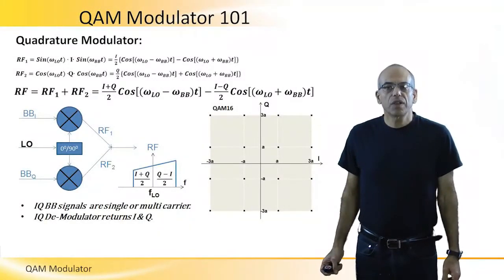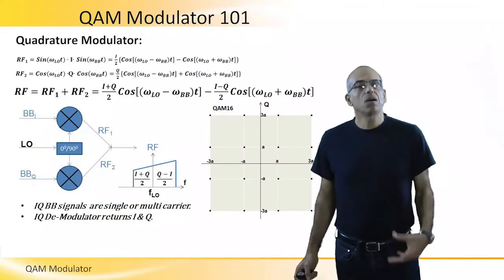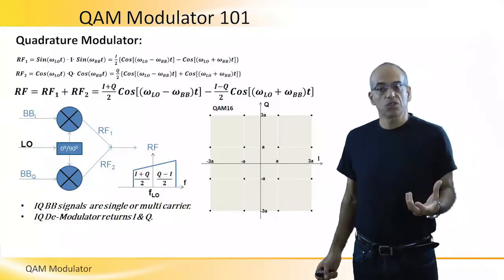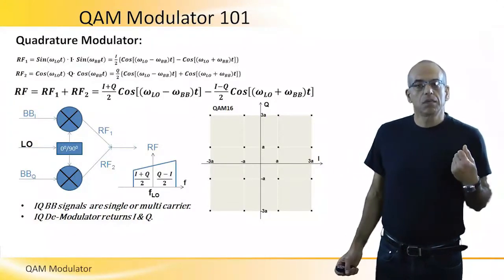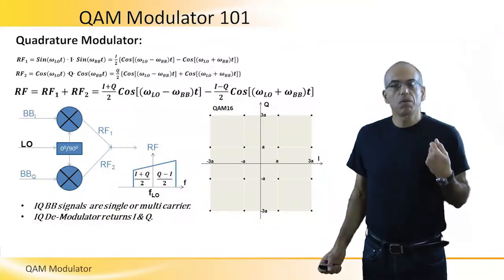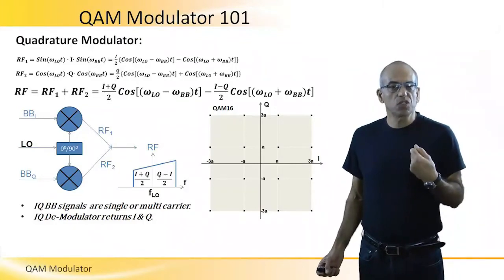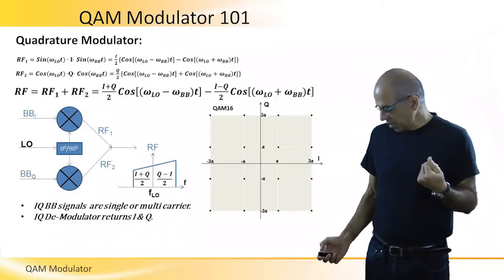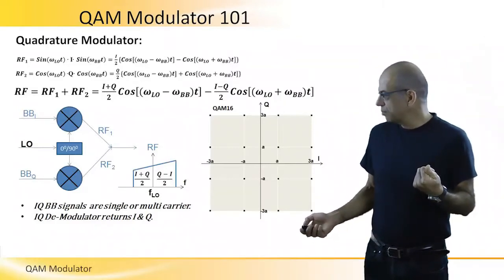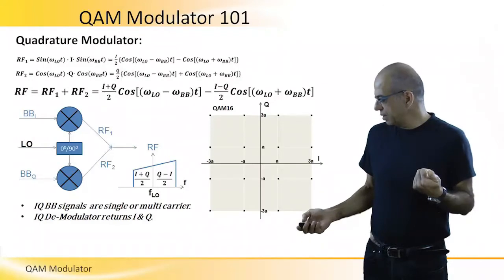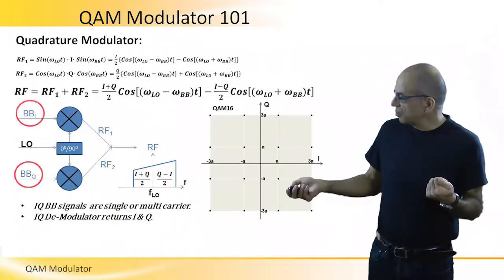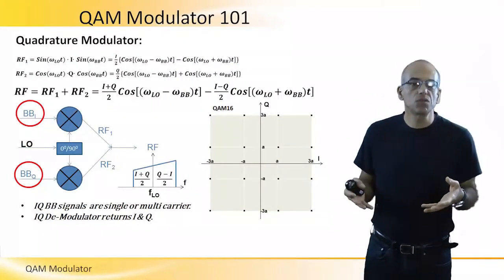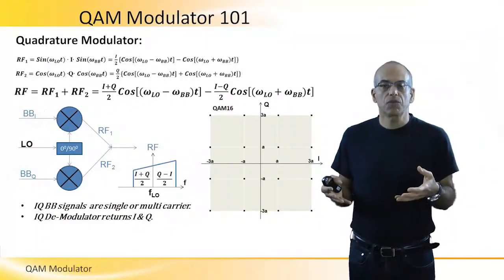Okay, let's discuss very schematically how a simple QAM modulator should look like. As we saw before, two amplitudes are coming from the baseband input, so we see baseband I and baseband Q. We want to multiply these two amplitudes with a frequency component.